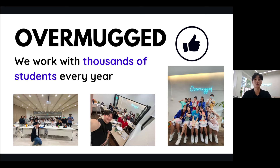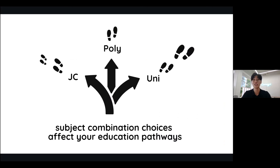Now one of the most important gateways in your education journey in Singapore is your subject combination selection as you proceed on from Sec 2 to Sec 3. Your choice of subject combination has far-reaching impacts beyond just upper secondary, as it will affect your JC subject combination and even your university course selection. A seemingly simple decision now can have far downstream impacts to your eligibility to many choices in the future.